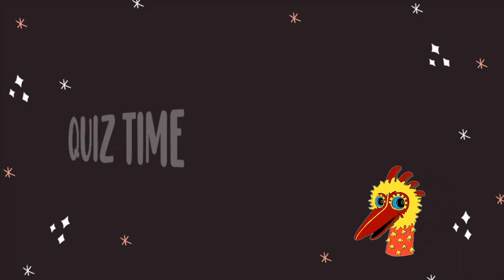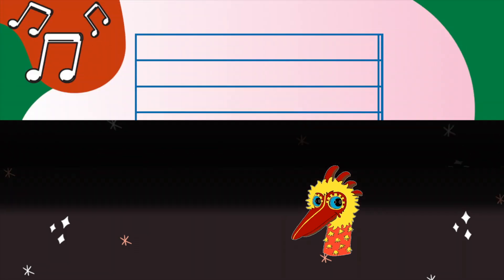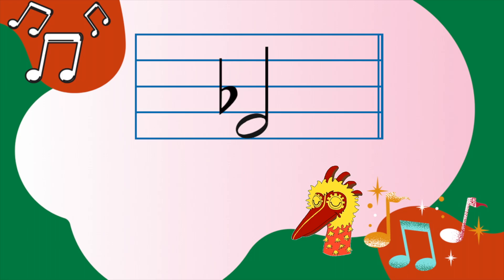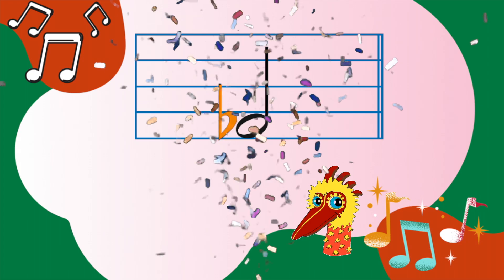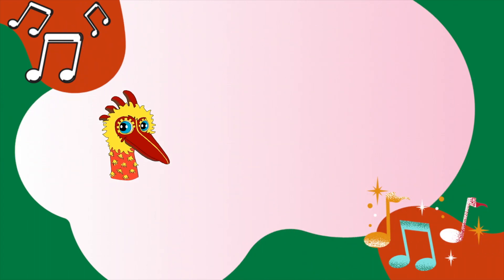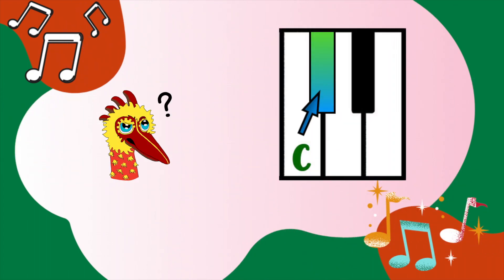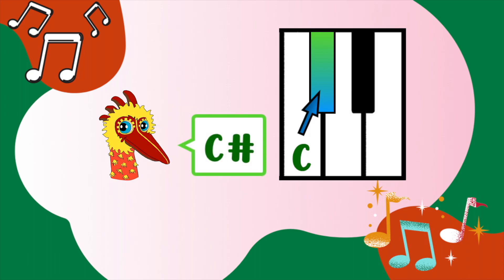Quiz time! Oh, this is my favourite part! Can you tell me if this is drawn correctly? Hmm... the note head is on the first space but the flat symbol is on the second space — that's wrong! The flat symbol should be in the first space, right next to the note head. Very good, Ruby! Next, tell me what this note is. Hmm... from C going upwards, so a sharp — it's a C sharp! Good one!